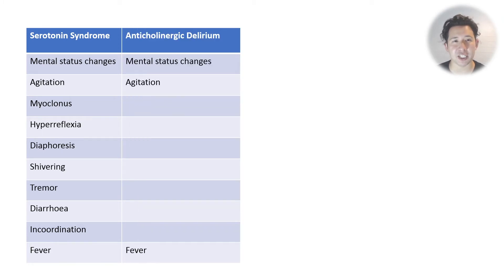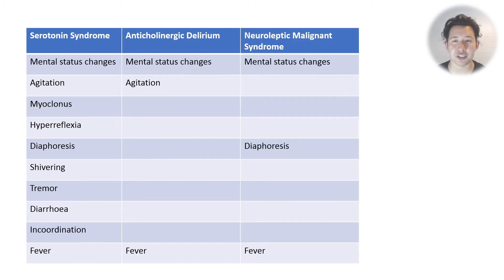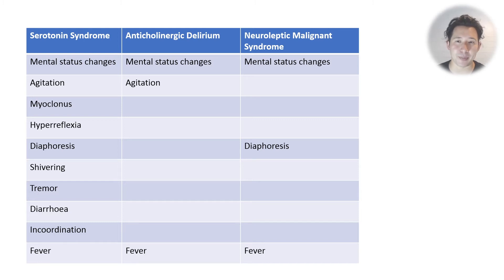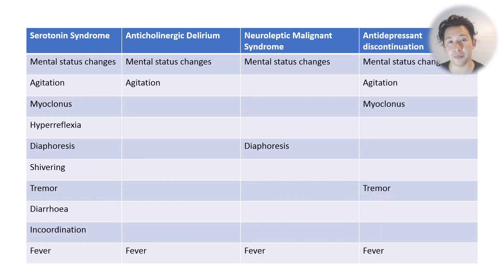Anticholinergic delirium could have a fever, mental status changes, and agitation — and if you get those three then you've got serotonin syndrome under these criteria. Or you could have neuroleptic malignant syndrome, which might have mental status changes, diaphoresis, and a fever as well, and then you could also be diagnosed with serotonin syndrome.